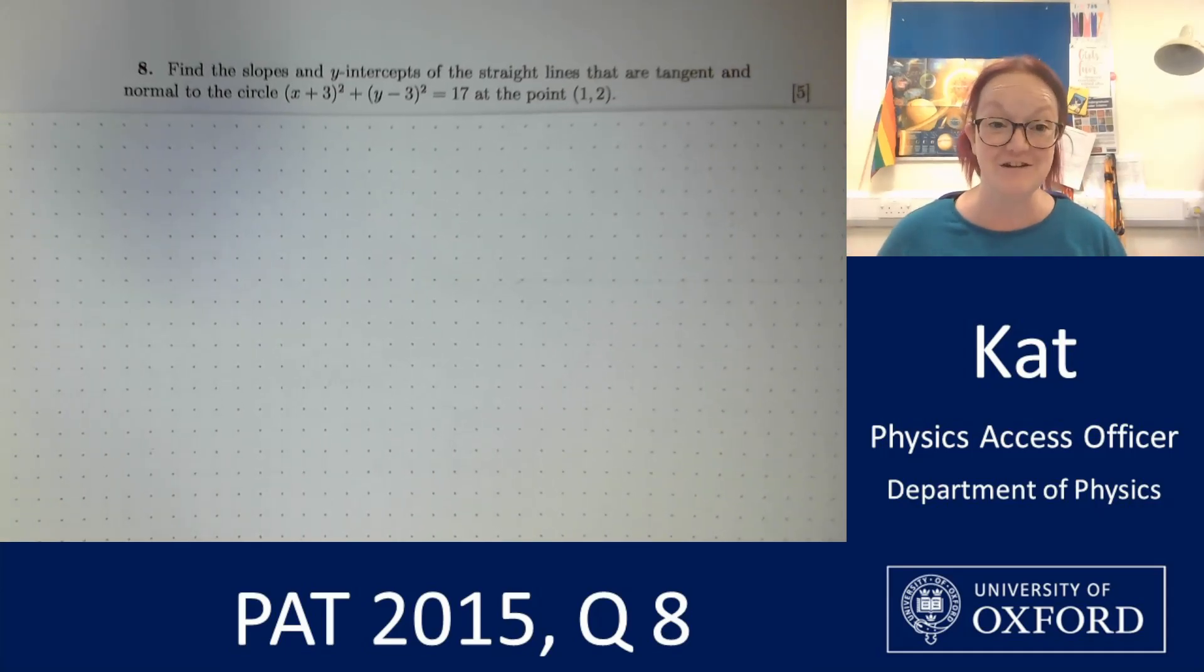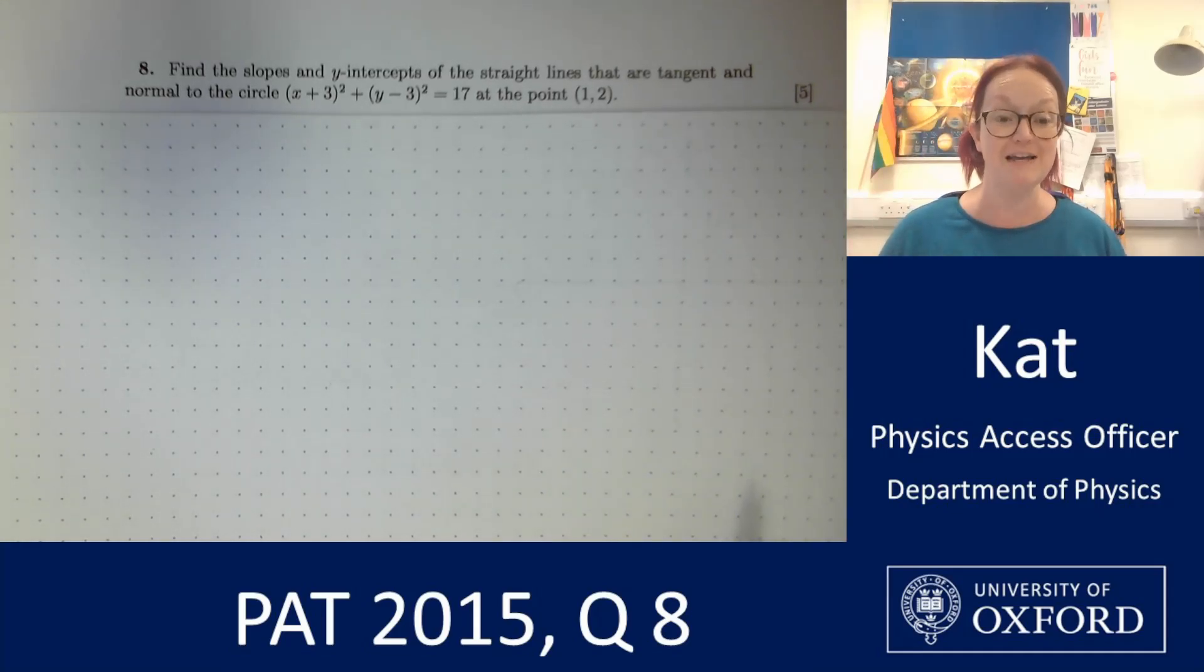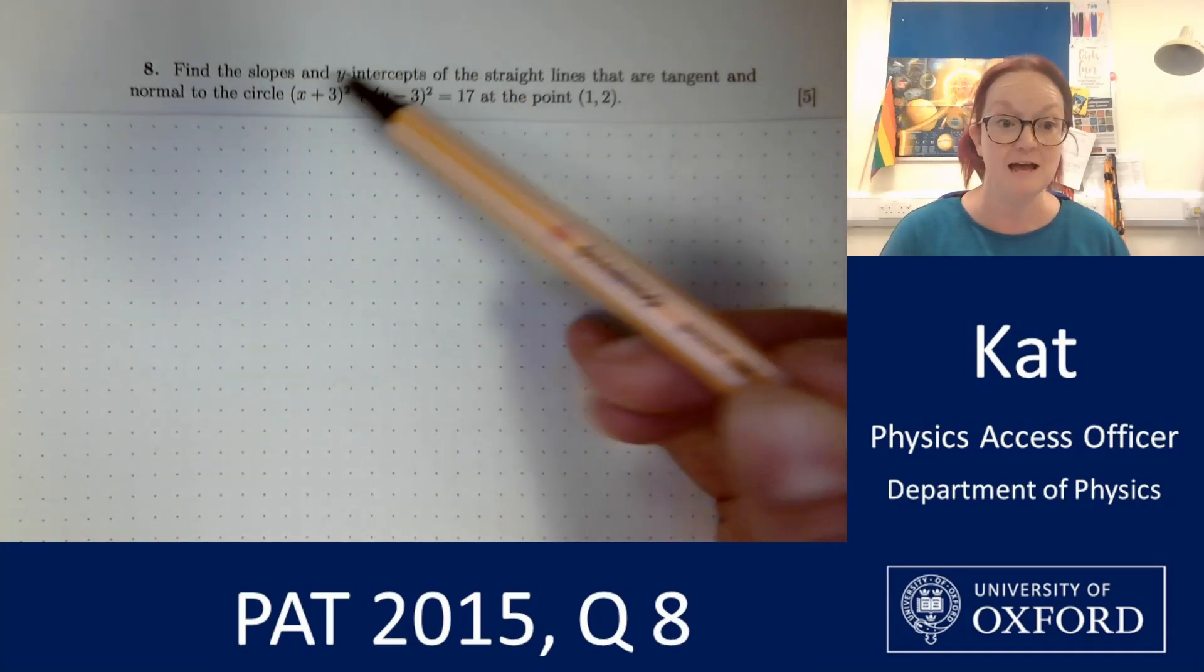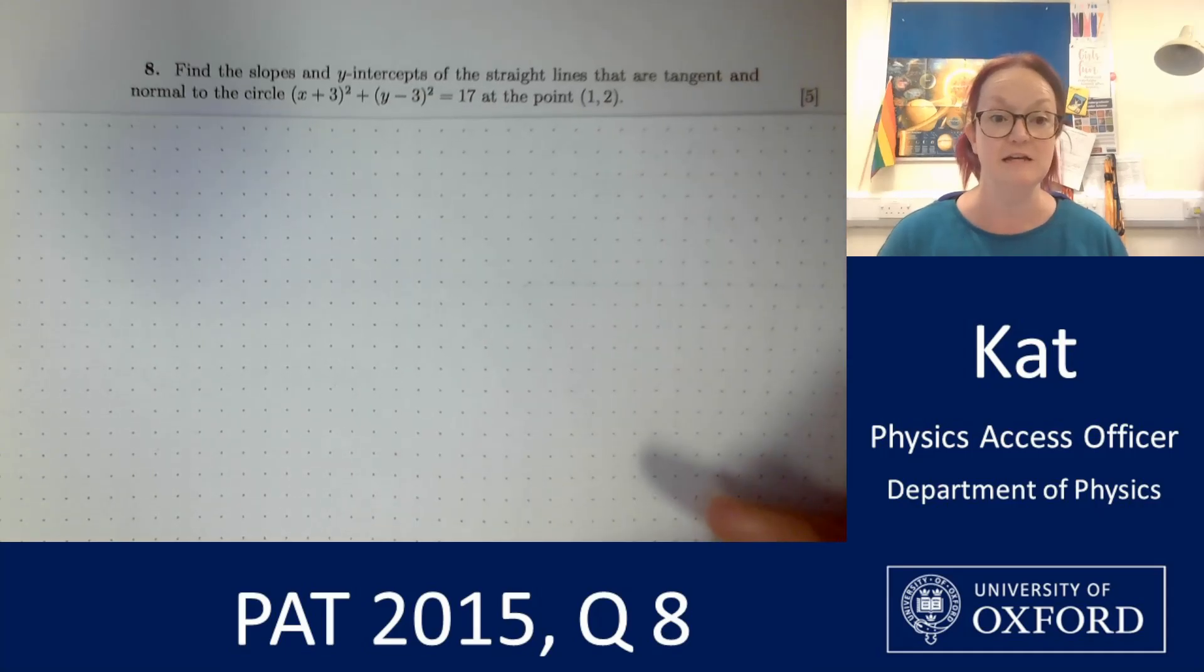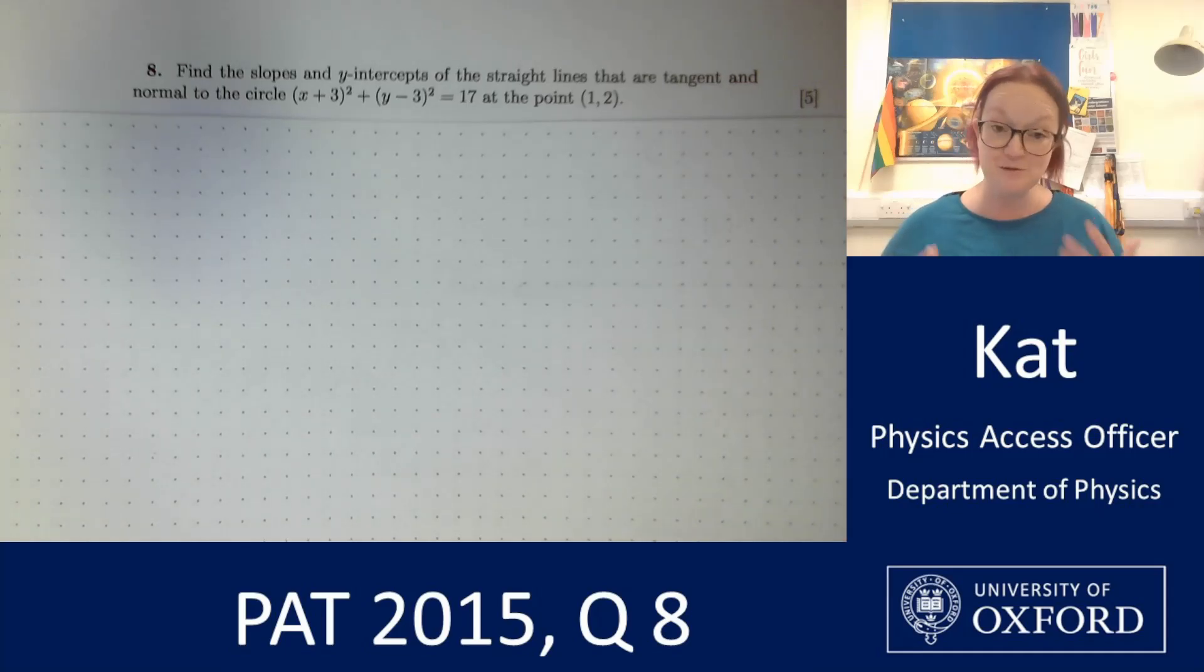So without further ado let's have a look at question 8. Question 8 asks us to find the slopes and y-intercepts of the straight lines that are tangent and normal to the circle with equation (x+3)² + (y-3)² = 17 at the point (1,2). So reading this question a bit more closely tells me there are actually four things that I'm looking for here. I've got two lines, the tangent to the circle and the normal to the circle at the point (1,2), and I've got to find their intercept and slope of both of them.